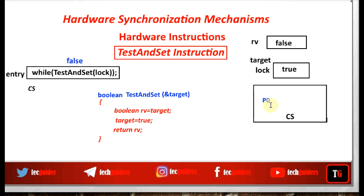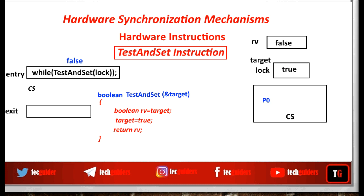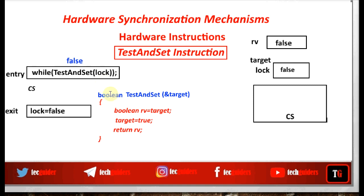Let the process be P0. P0 is inside the critical section, and while a process is inside the critical section, the lock is set to true. Another process that tries to enter the critical section cannot enter. And when this process exits the critical section, it executes lock equals false, so the lock is unset. Any process that is trying to enter the critical section can now enter. This function tests the value of lock and returns it — if lock equals false, the lock is set to true and the process enters; if lock is true, the process keeps waiting. While exiting, lock is set to false.